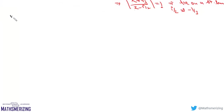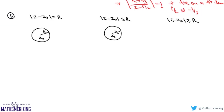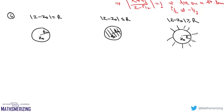The second important locus is |z - z₀| = r, |z - z₀| ≤ r, and |z - z₀| ≥ r. In the first case it represents points on the circle with center z₀ and radius r. In the second case it represents points on and inside the circle with center z₀ and radius r. In the third case it represents points on and outside the circle with center z₀ and radius r.